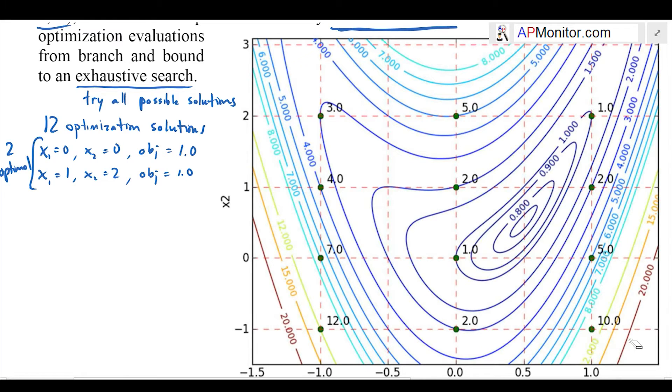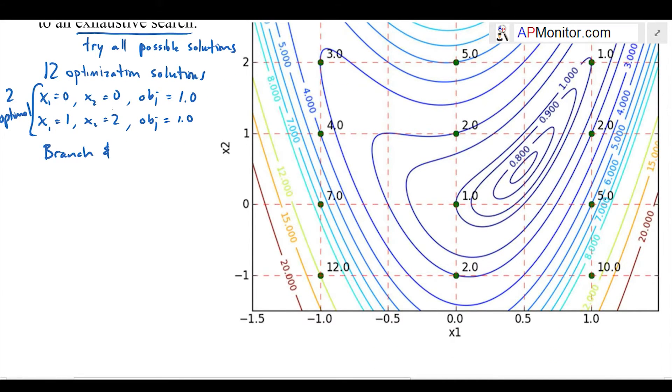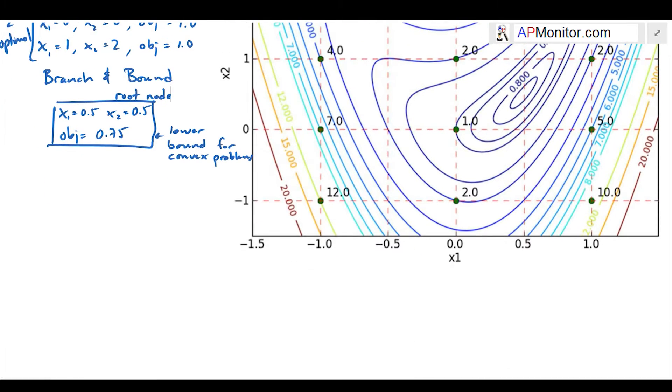With branch and bound, we're going to start just with our root node, the 0.5, 0.5 with an objective of 0.75. That's going to be a lower bound as long as this is a convex problem, even if it's a nonlinear problem. This is my root node.